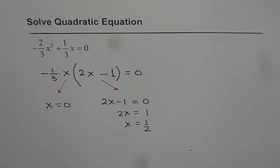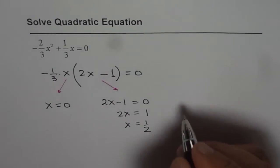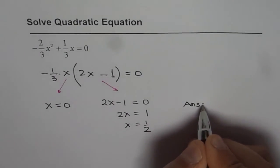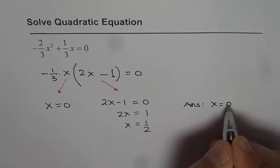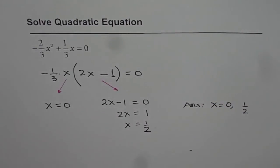So these are the two solutions for the given equation. So we can write down our answer now as x is equals to 0 or x is equals to half. So that is how we can solve this kind of quadratic equation.